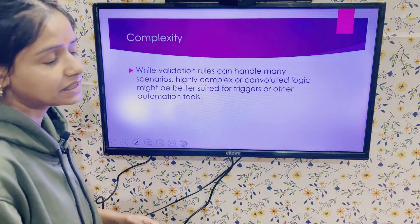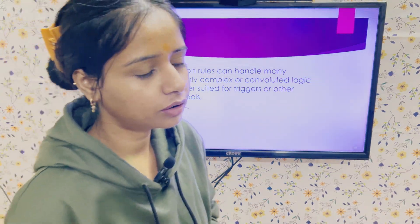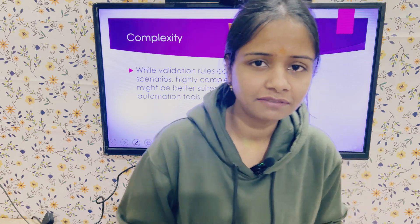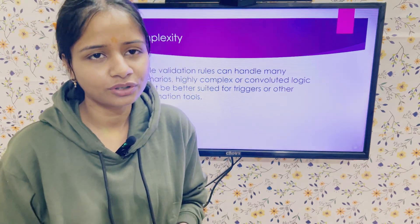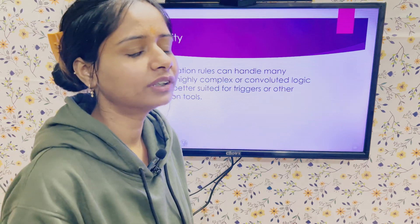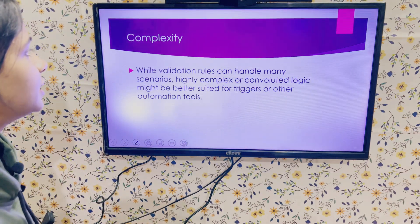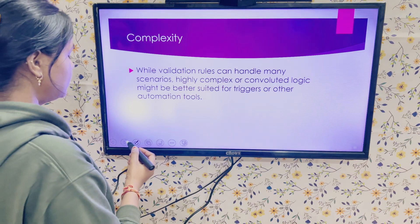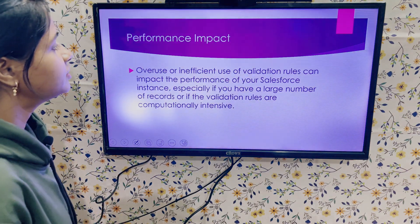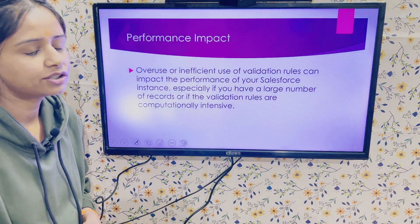The first limitation is complexity. While validation rules can handle many scenarios, when it comes to complex or high-level scenarios — or when we want to work on related records or cross objects — we cannot use validation rules. In such cases we need to go with other automation tools like flows and triggers.